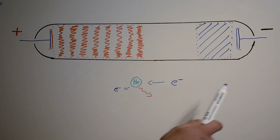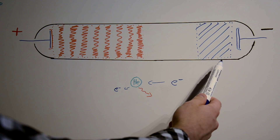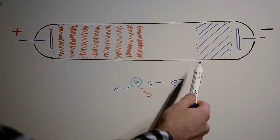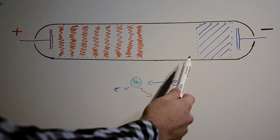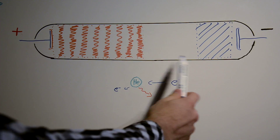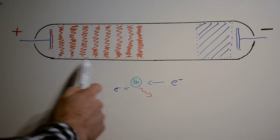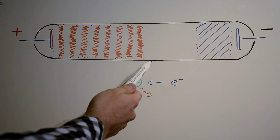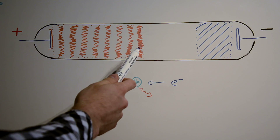At the cathode we get a little glowing area called the negative glow area. Then we go to a dark space — the Faraday dark space — where nothing glows. Then we get to the positive column, which glows in a color that depends on the gas inside the tube.